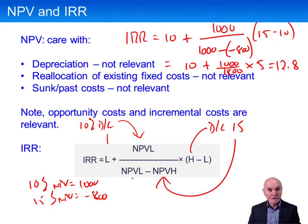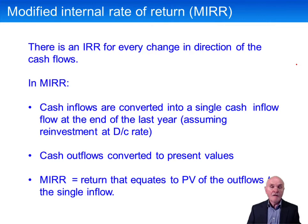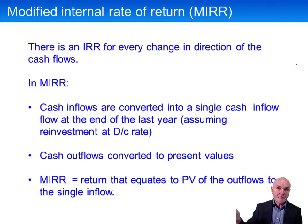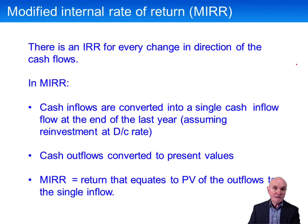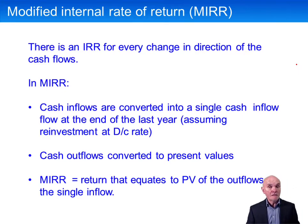One of the problems with internal rate of return is that, strictly speaking, there's an internal rate of return every time the direction of the cash flow changes. A normal project has negative cash flow at time 0 when you invest, then positive cash flows at times 1, 2, and 3. However, if at the end of the project you had a lot of money to spend on restoring the land or premises, it would go negative again, giving you two internal rates of return — multiple yields, as they're called.